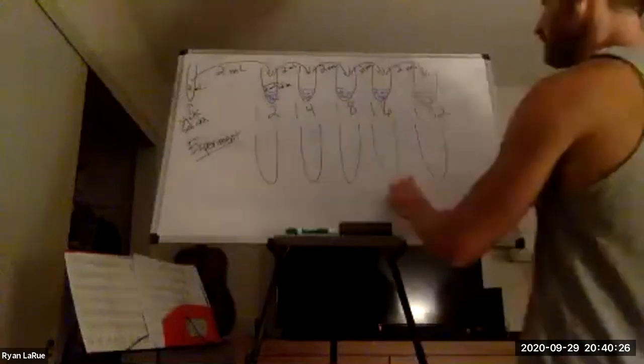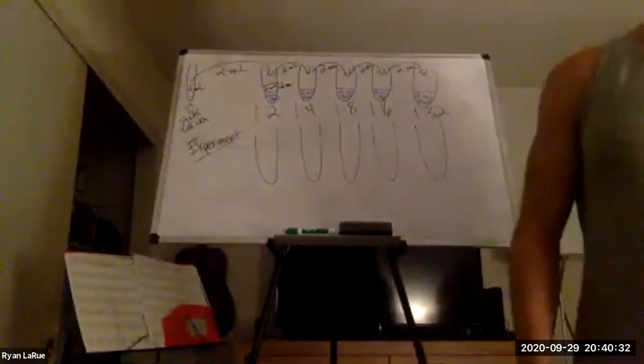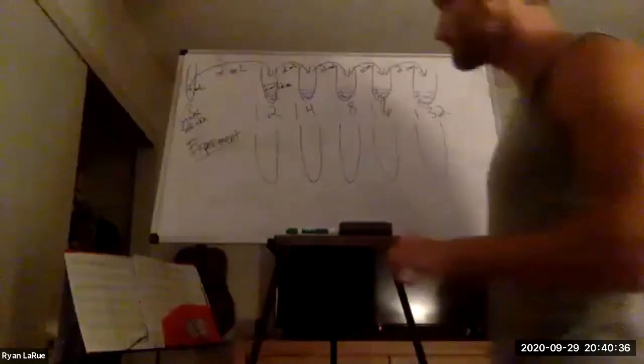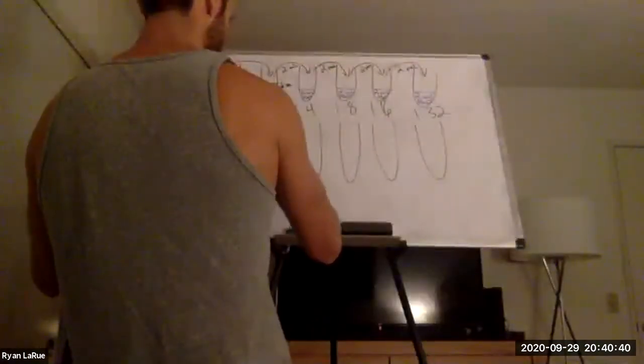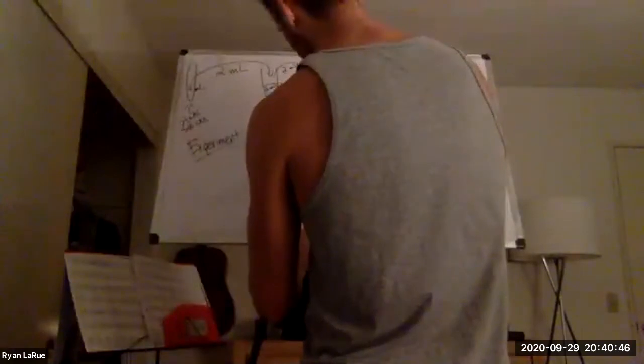How many is it? Five? One, two, three, four, five. Okay. And in each of these test tubes for our experiment, I'm going to add two milliliters of starch. Two mils of the starch, which is a liquid in our lab. I'm going to add two mils to each one.